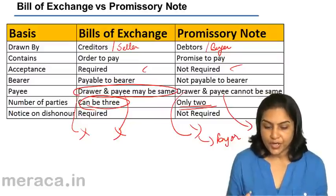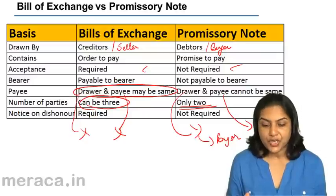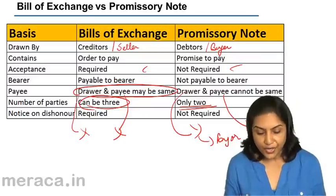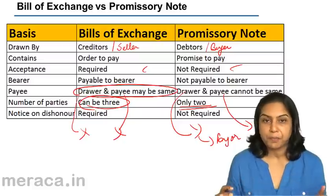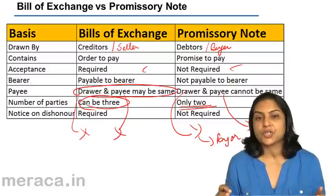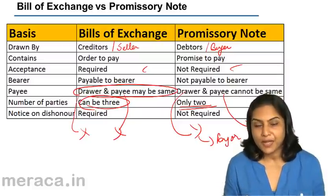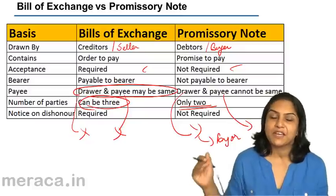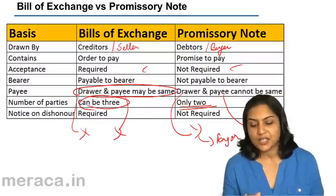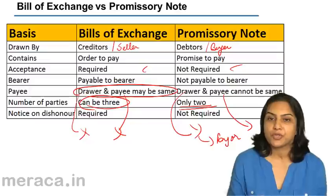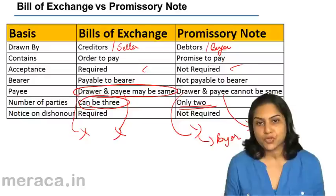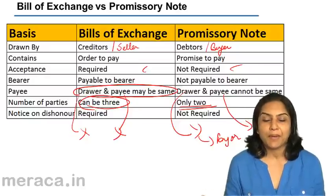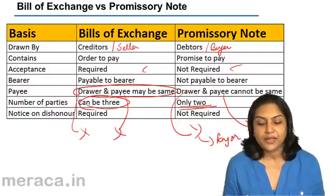Regarding notice on dishonor: if a bill of exchange is dishonored, the drawer of the bill — the person who has drawn the bill — must be given notice of its dishonor. But in case of a promissory note, this is not required, because the person who made the promissory note himself would not be honoring the note.